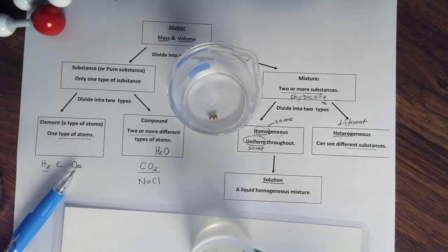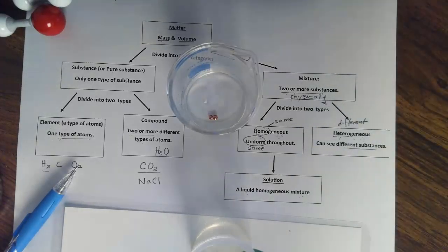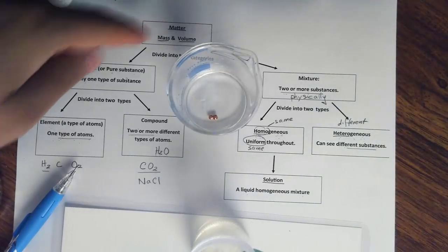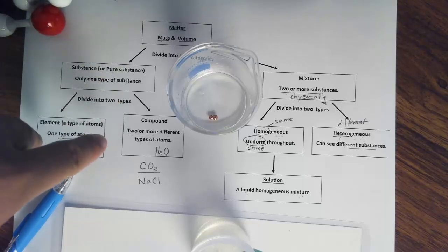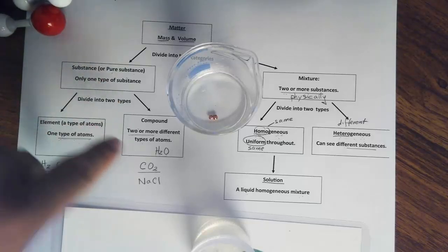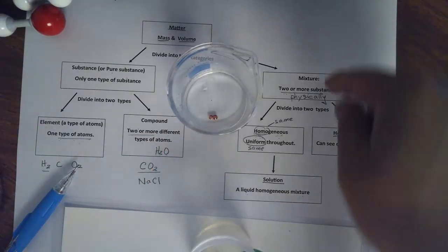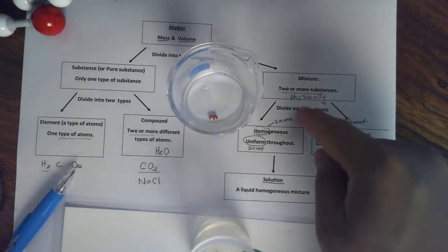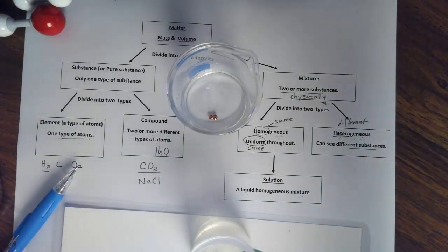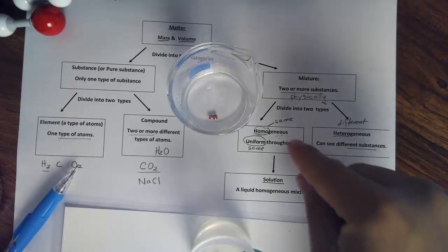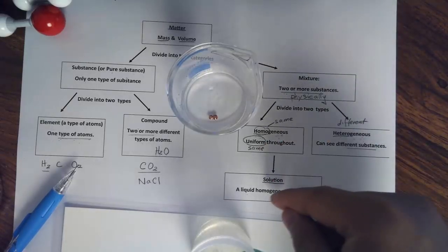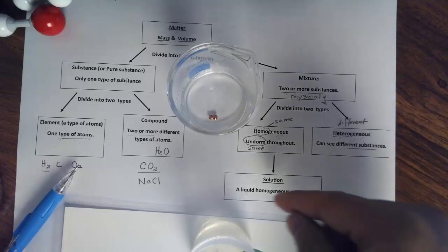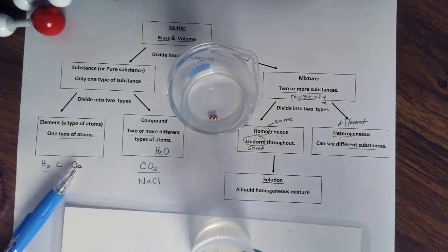So this is how we classify matter. Matter can be grouped into pure substance — either element or compound. Or, if we mix two or more substances physically together, we can have a homogeneous or heterogeneous mixture. And when a homogeneous mixture is in liquid form, we have a solution.